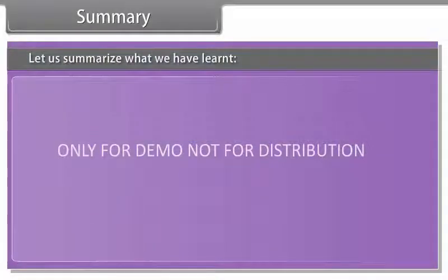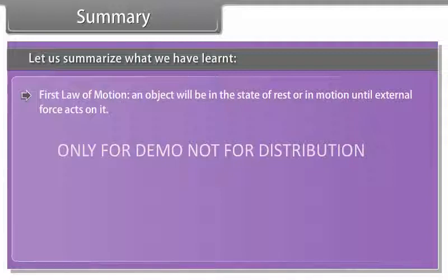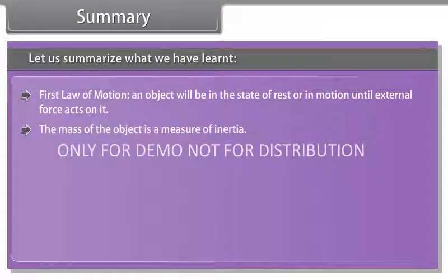Let us summarize what we have learned. First law of motion: an object will be in the state of rest or in motion until external force acts on it. The mass of the object is a measure of inertia. Force of friction always opposes the motion of objects.